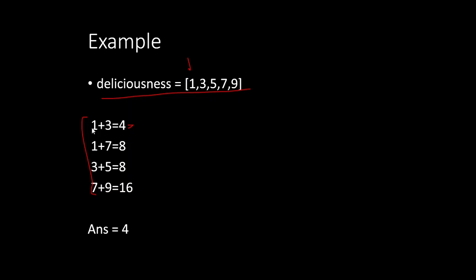We can see that 1 plus 3 equals 4, which is 2 power 2. 1 plus 7 equals 8, which is 2 power 3. Then 3 plus 5 equals 8, also 2 power 3. And 7 plus 9 equals 16, which is 2 power 4. That's how the answer equals 4.